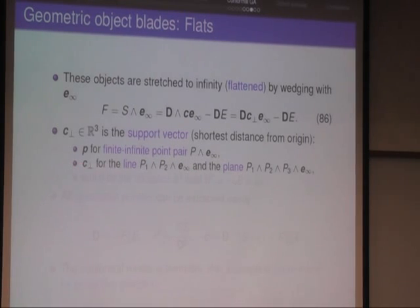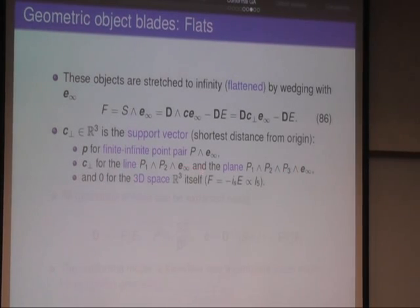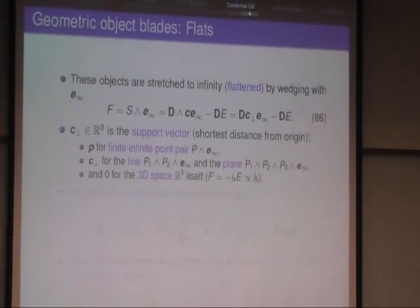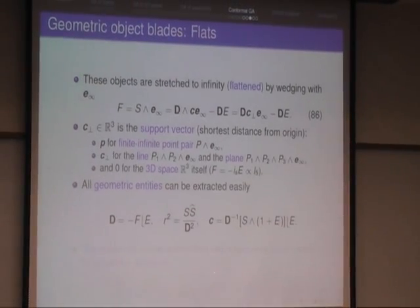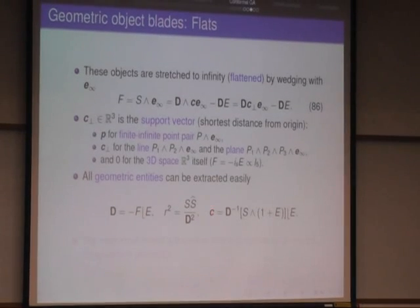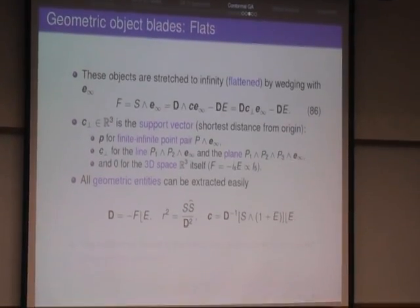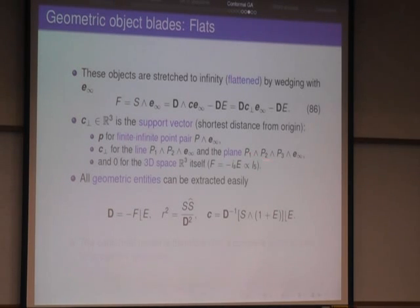And the c is the distance from the origin. For a line, you know, it's a support vector. And for a plane, also the support vector. And the space has no distance from the center. And you can easily extract the carrier blade, the radius of the object, and the center from the expressions which you form by taking one, two, three, or four arbitrary points on the object.